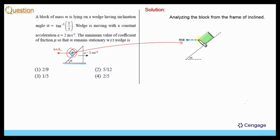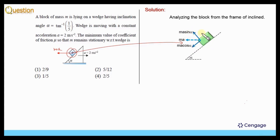The component of the pseudo force parallel to the inclined surface is ma cos alpha, and perpendicular to the inclined surface is ma sin alpha. The component of the weight perpendicular to the inclined surface is mg cos alpha, and parallel to the surface is mg sin alpha.